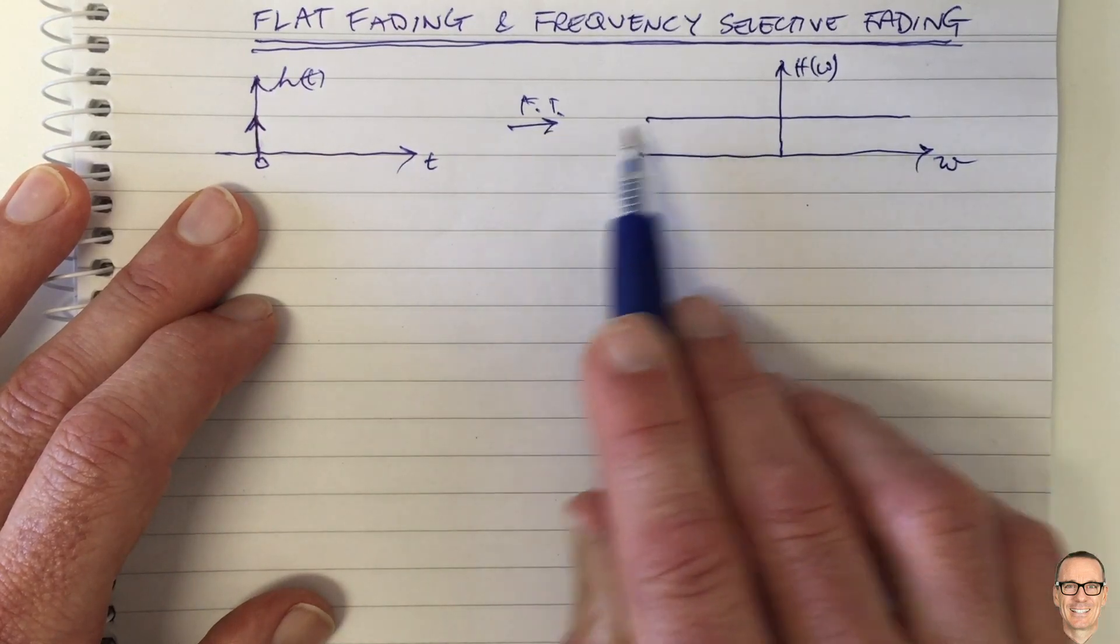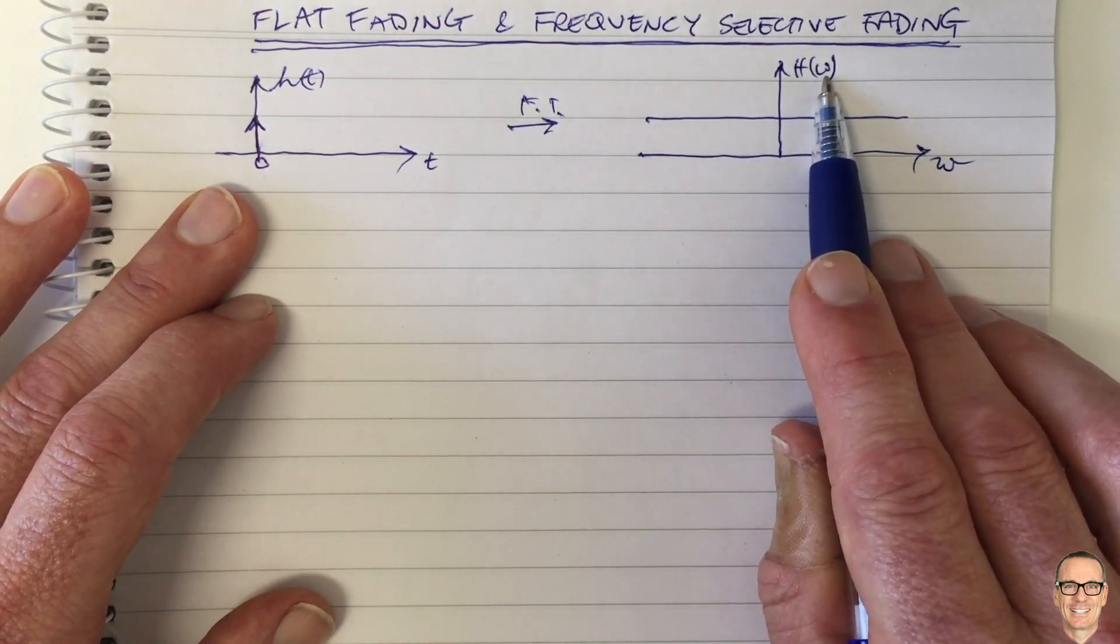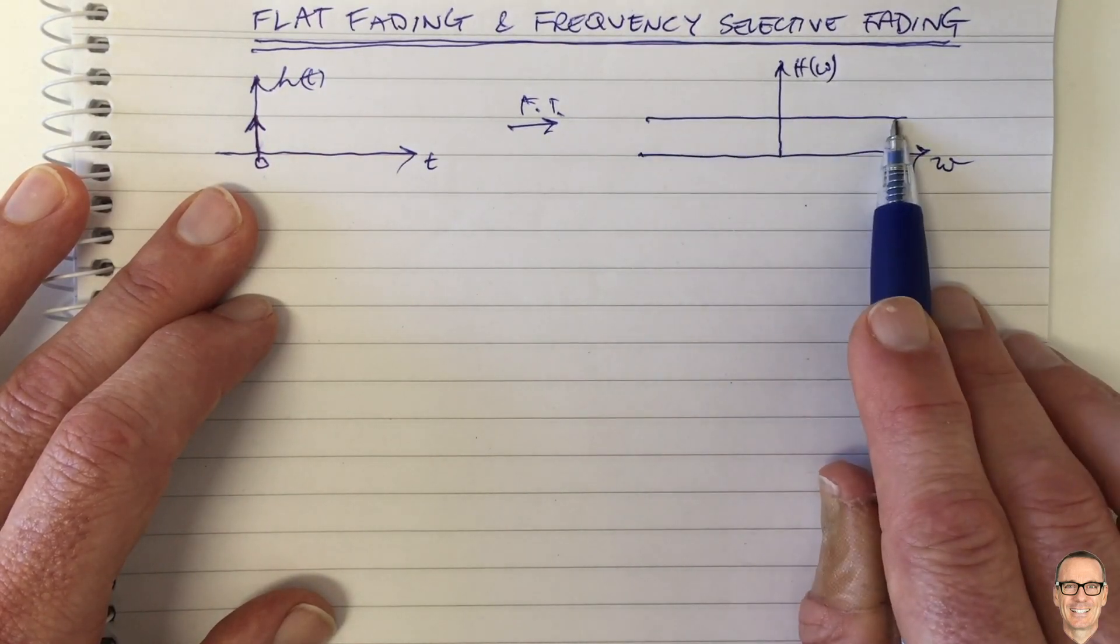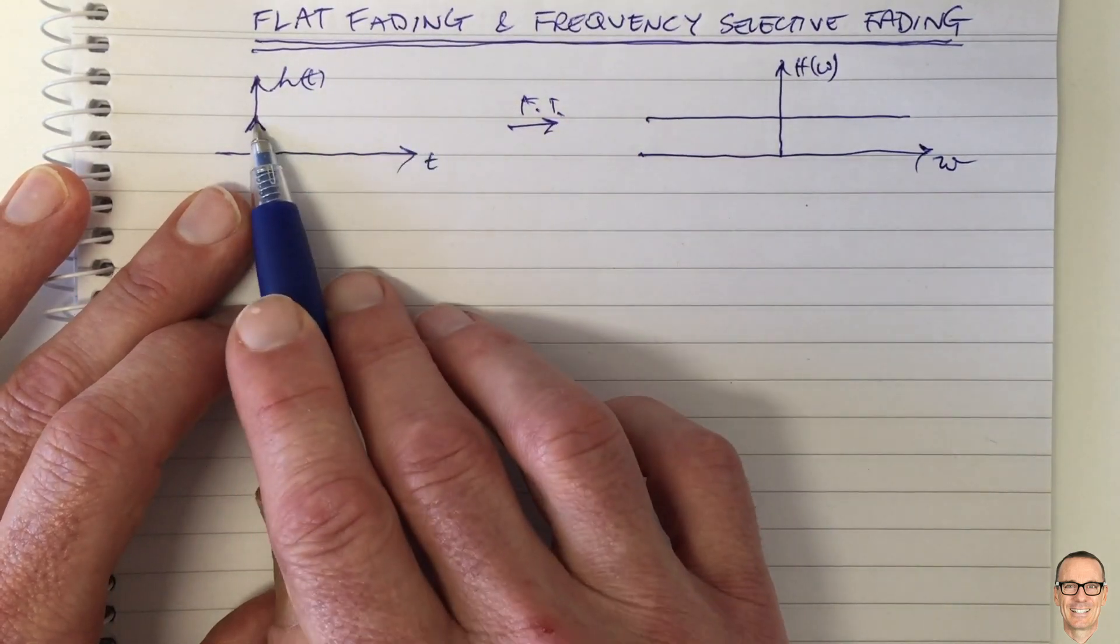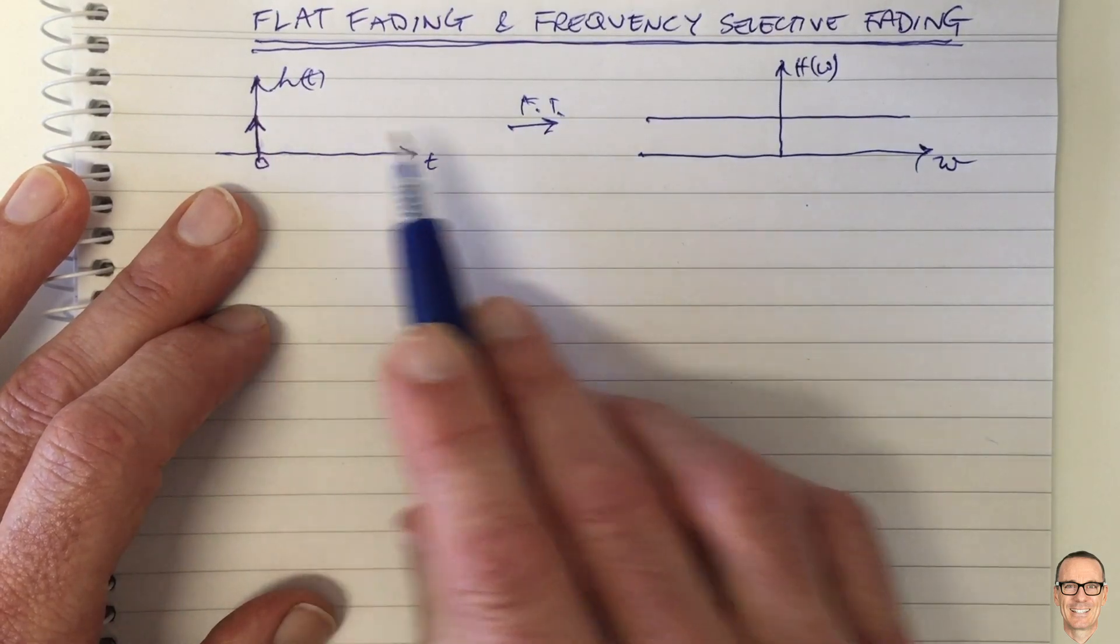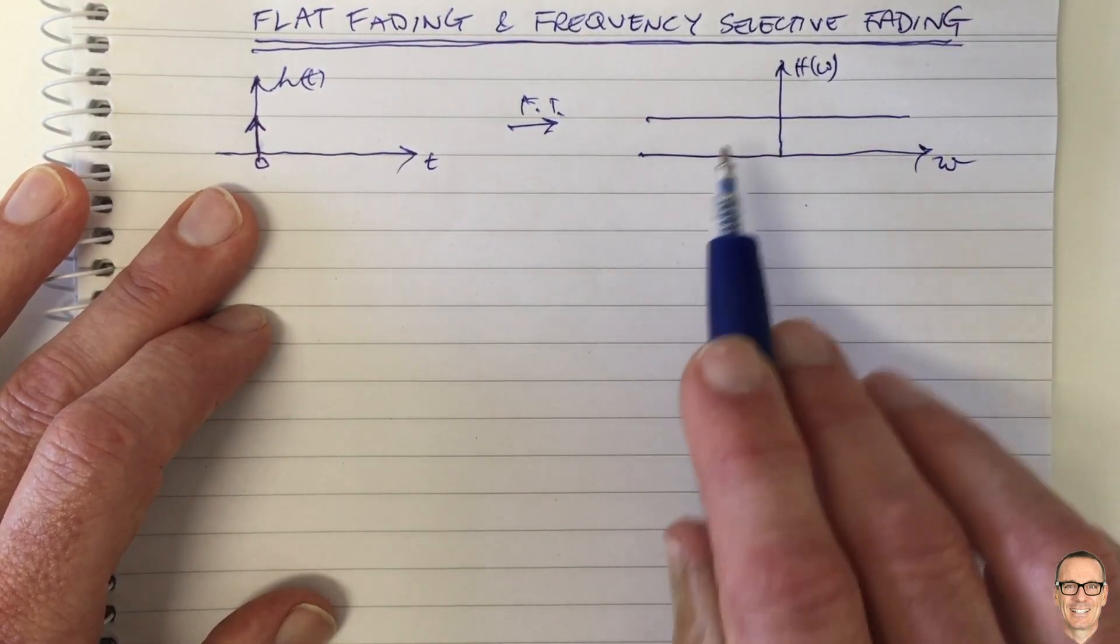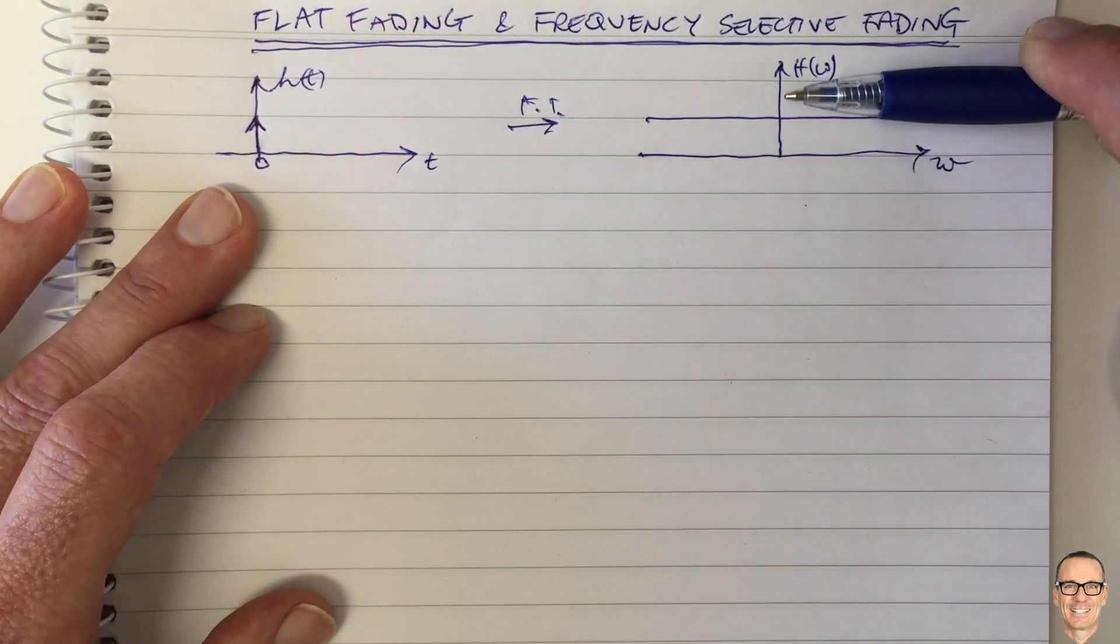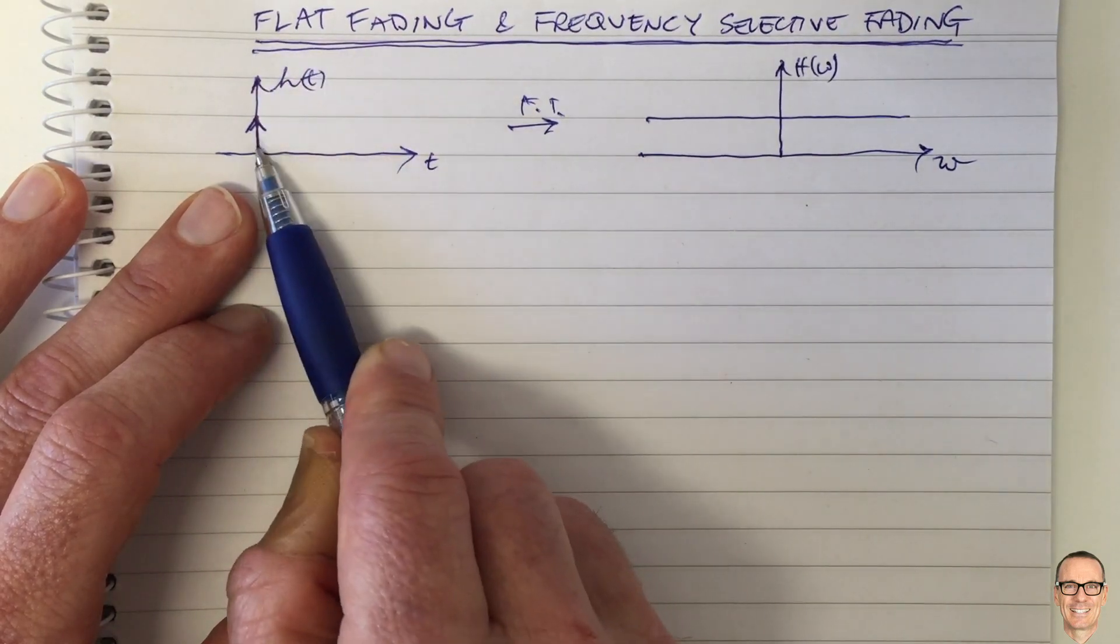We know the Fourier transform of the delta function is a horizontal, equal elements of each frequency. And this is flat. So this is where we get the word flat from. The fading part is because perhaps this gain goes up and down over time, in which case this will go up and down over time, and sometimes it might go down low, in which case we call fading, and sometimes it's higher, but it's flat fading if you have a single path.